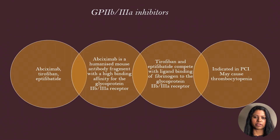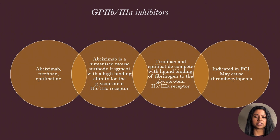The next class of antiplatelet drugs is glycoprotein 2b3a inhibitors. They include abciximab, tirofiban, and eptifibatide. Of these, abciximab is a monoclonal antibody that binds to the glycoprotein 2b3a receptor, whereas tirofiban and eptifibatide mimic part of the structure of fibrinogen and compete with fibrinogen for binding to the glycoprotein 2b3a receptor.